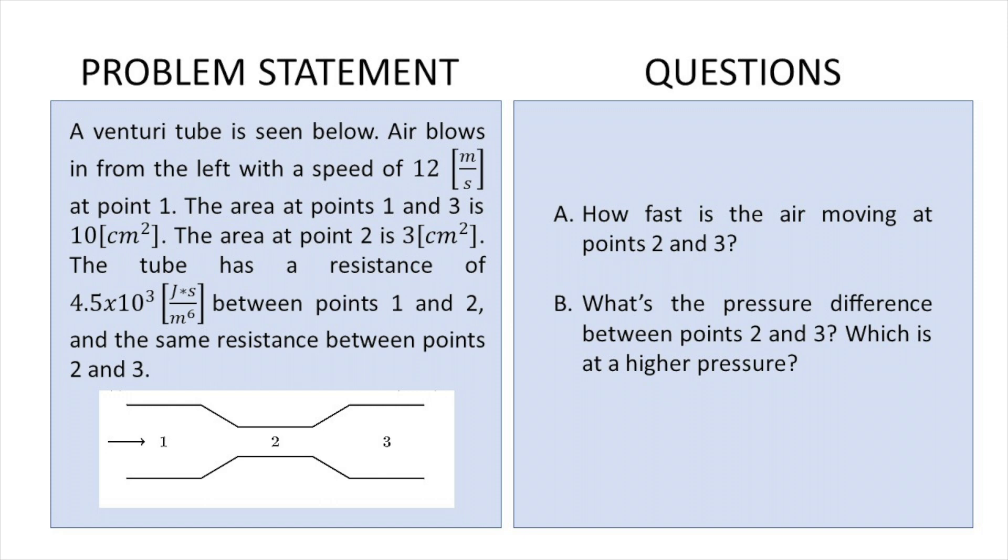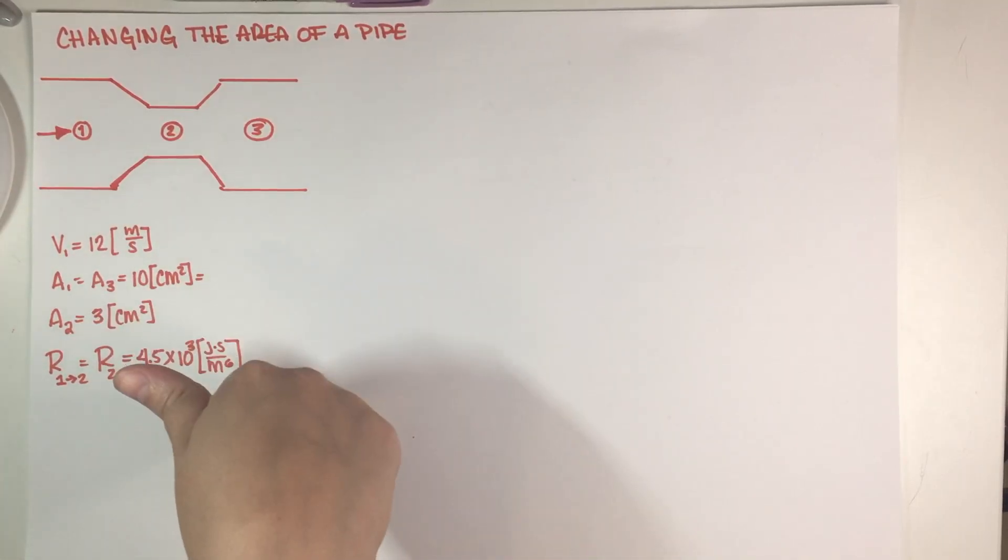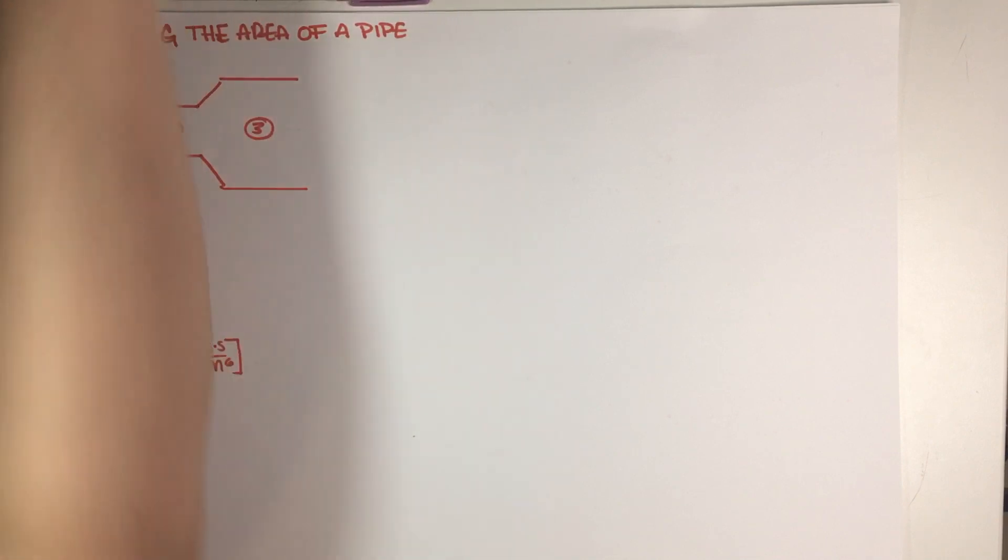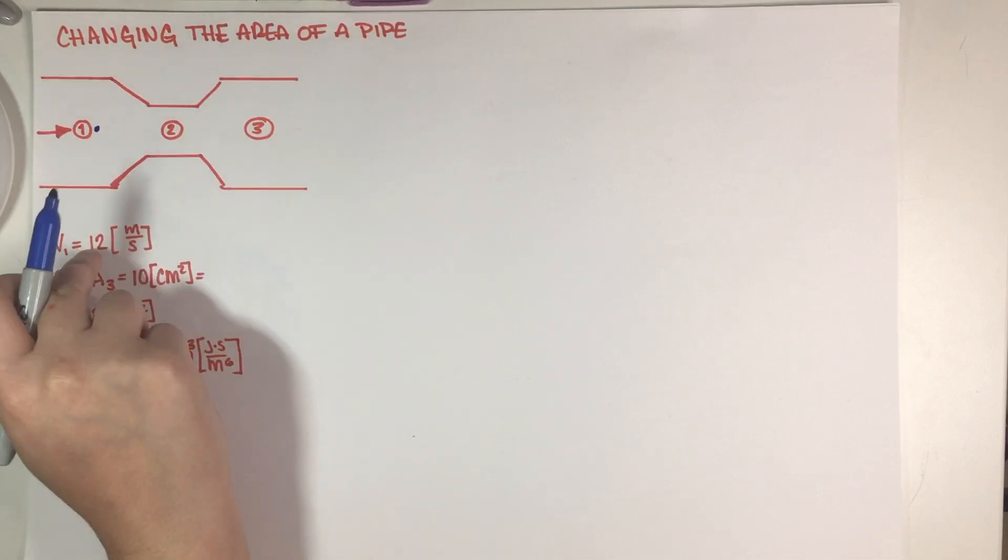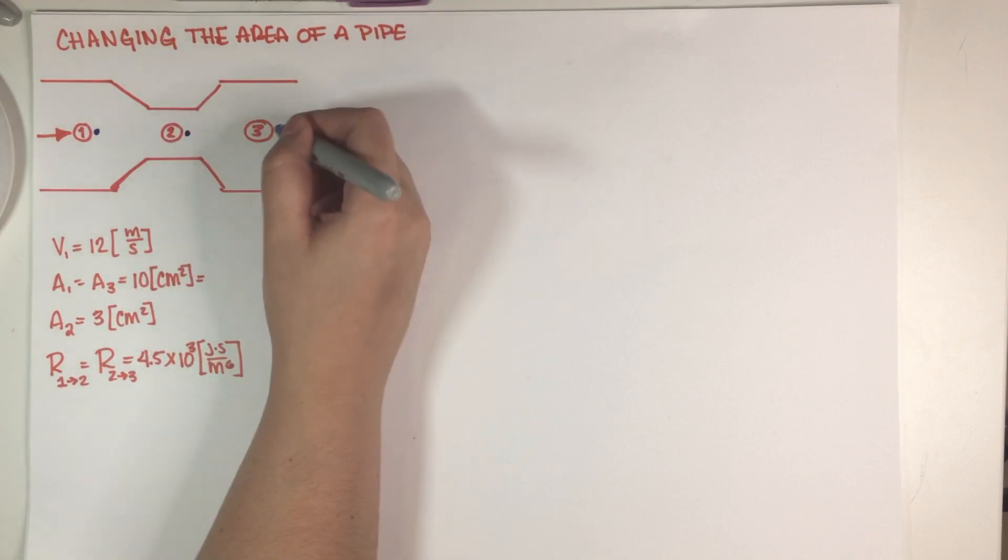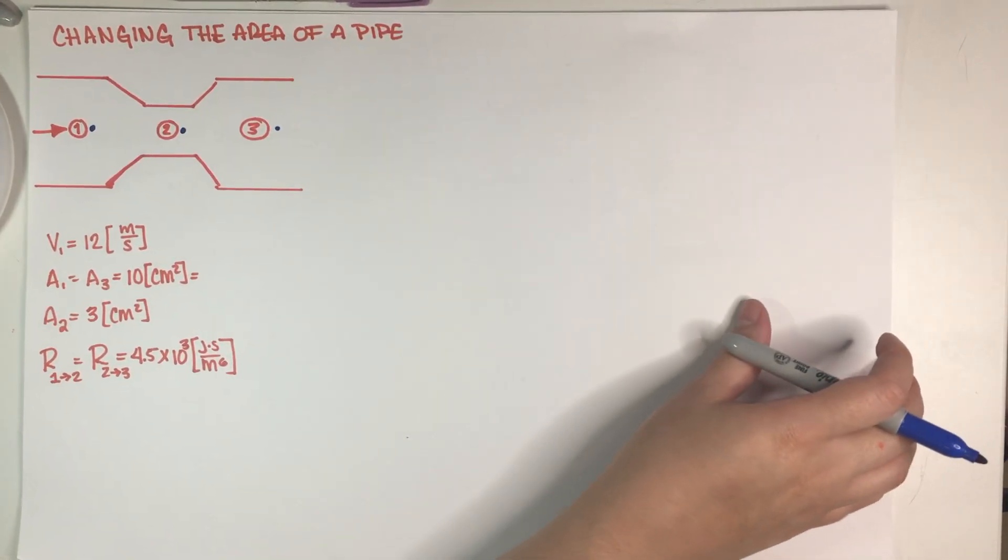The first thing that we have to answer is how fast is the air moving at points 2 and 3. As you can see I have everything written down here in my notes, so I have a little picture and I have all of the information. The first thing that we have to find out is we are given a velocity over here which is 12 meters per second and we have to find basically the velocity over here and the velocity over here.